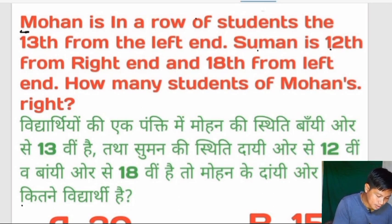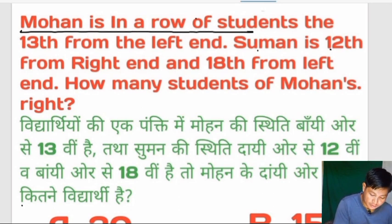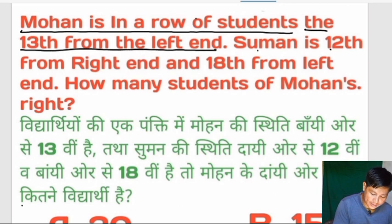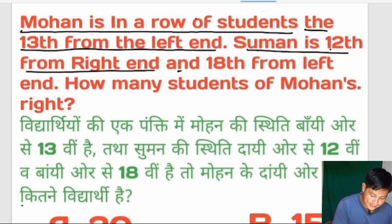Everyone is in a row of students. Mohon is 13 from the left, and Sumon is 12 from the right and 18 from the left.